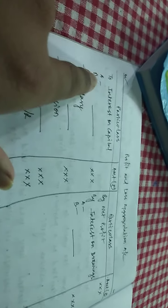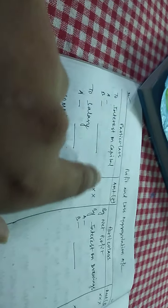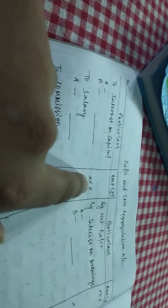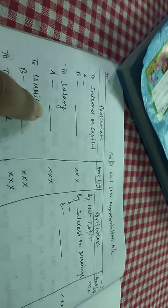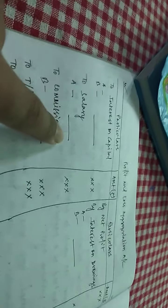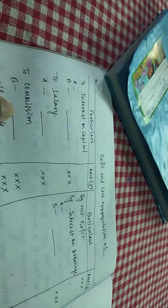Interest on capital: the capital invested by the partners in the business — interest is being provided to them on that. Such interest for both partners A and B will appear here, and the total will come in the amount column. Also, the salary, whatever will be provided to the partners — for example, salary is only provided to A — then the salary of A will be transferred to the amount column. Similarly, commission: if commission is being provided, suppose only to B, then that commission will appear here in the amount column.